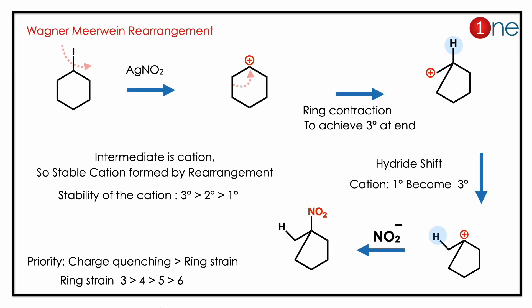In the first step, silver nitrite abstracts iodine and you have cation formation. Whenever cation formation occurs, the chances of Wagner-Meerwein rearrangement are present — always the stable cation forms. Here, after the cation forms, ring contraction happens in order to establish the stable cation. Ring contraction is rare because of strain.